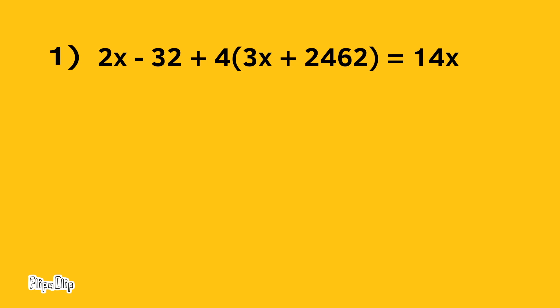Number 1. Lynn was looking at the equation. She said, I can tell right away that there are no solutions because on the left side you will have 2x plus 12x and a bunch of constants, but you have just 14x on the right side. Do you agree with Lynn? Explain your reasoning.